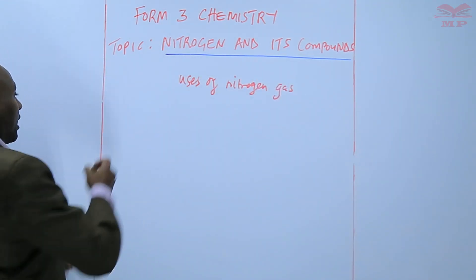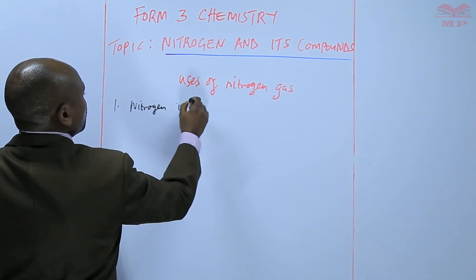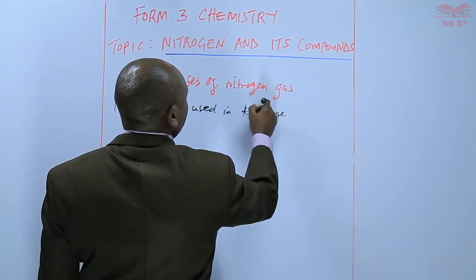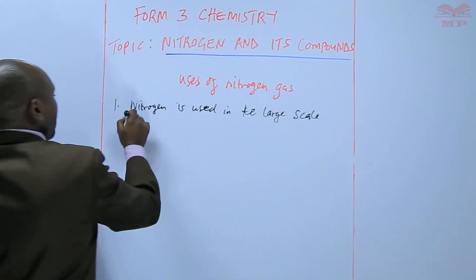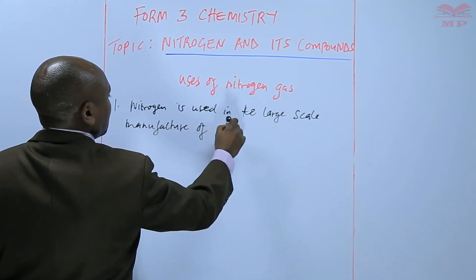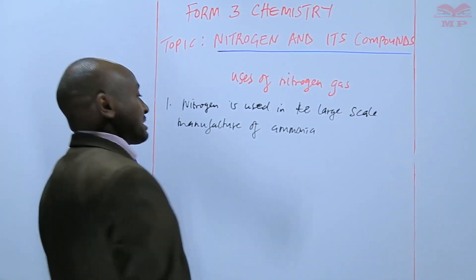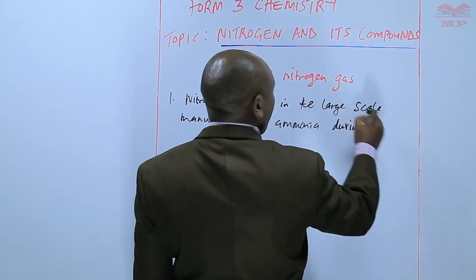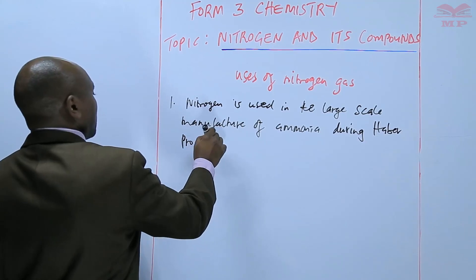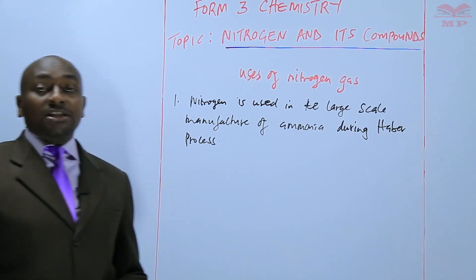First of all, nitrogen is used in the large scale manufacture of ammonia. This process, we refer to it as the Haber process. The Haber process is the process involved in the large scale manufacture of ammonia.